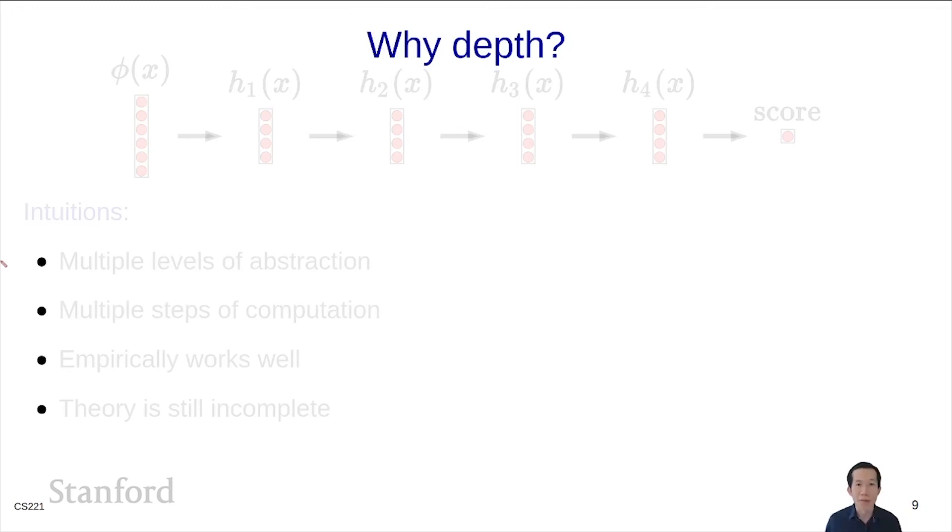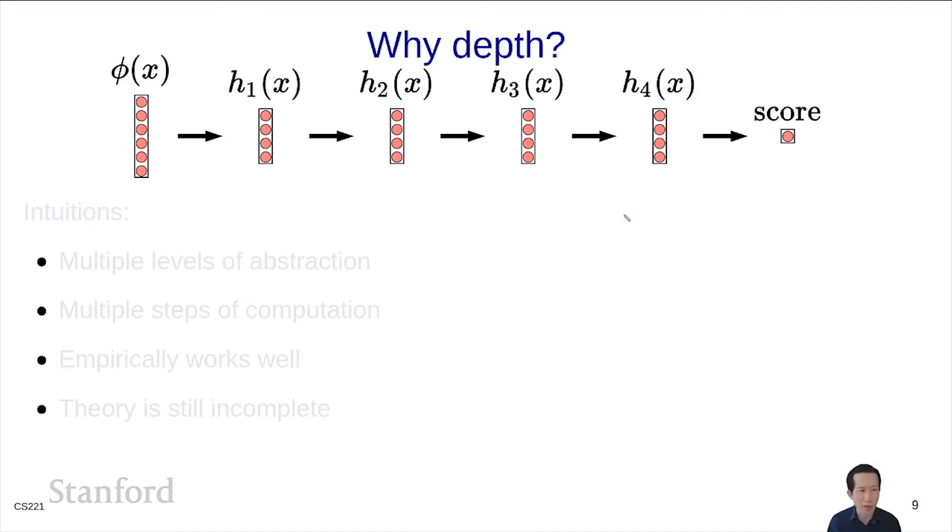There's a question of why depth. One intuition is representing different levels of abstraction from low-level pixels to high-level objects. Another way to think about this is performing multiple steps of computation. Just like in a classic program, more steps give you more expressive power. You can think of each operation as doing some compute. Learning will figure out what kind of computation makes sense for making the best prediction.